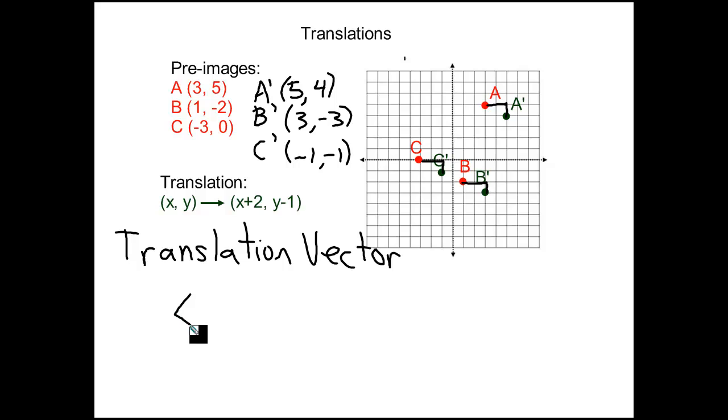The command is really just like an ordered pair, but instead of using parentheses, they use these pointy brackets, for lack of a better phrase. And the x-coordinate is just whatever you'd add on to the x-value in each ordered pair.